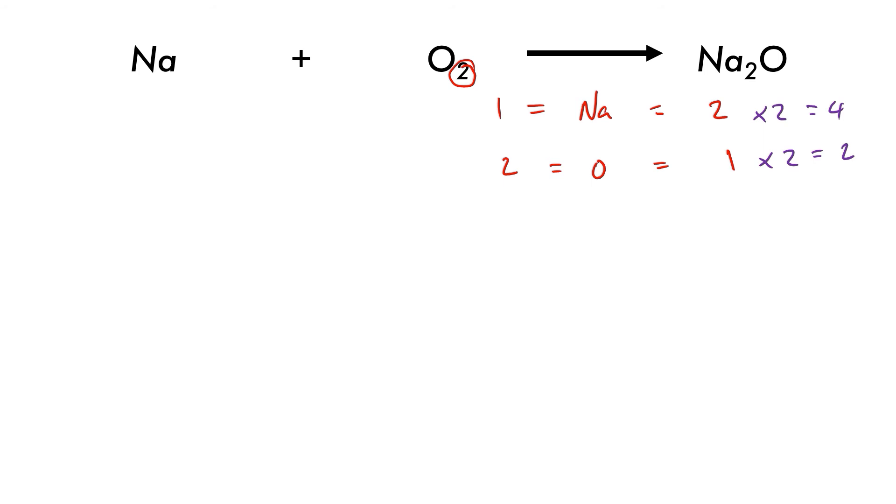Now the easiest thing to do is simply multiply the number of sodium atoms by four to get four sodium atoms on both the reactant side and the product side.